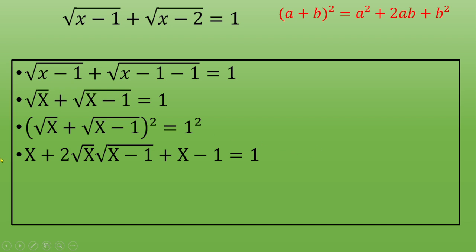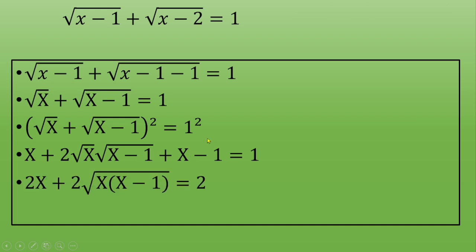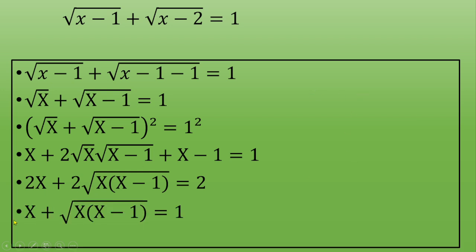Simplifying, the capital X terms and the minus 1 on the left give you 2·capital X minus 1, while the right side is 1. Rearranging puts 2 times the square root of capital X times the square root of (capital X minus 1) equal to 2 minus 2·capital X, so you divide by 2, leaving the square root of [capital X(capital X minus 1)] equal to 1 minus capital X.